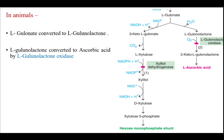L-gulonate has two fates in animals and in humans. In animals, L-gulonate is converted to L-gulonolactone, and this L-gulonolactone is converted to ascorbic acid by the enzyme L-gulonolactone oxidase.